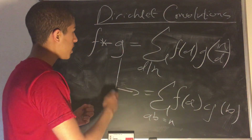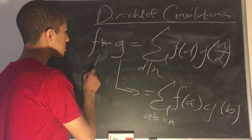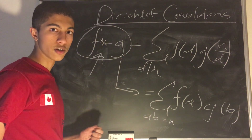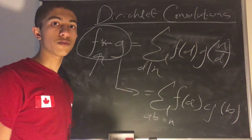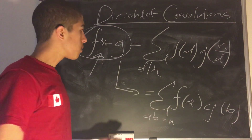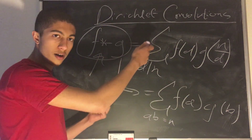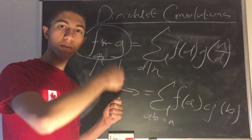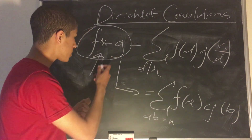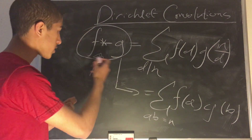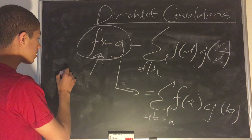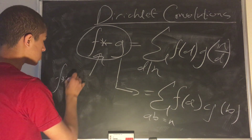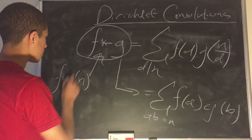So given some n — and remember this entire thing, this f star g, that's a new function. When I said that the Dirichlet convolution is an operation that takes two functions and spits out another function, that function is going to be a function of n. So in reality it will be written as f star g of n.